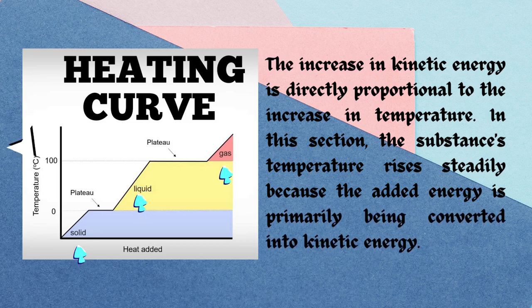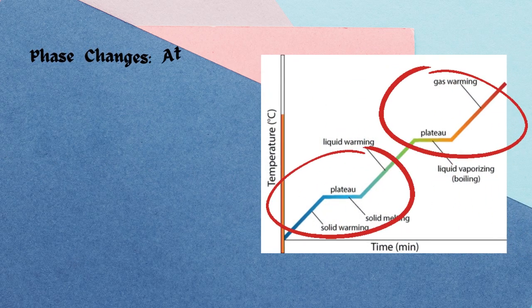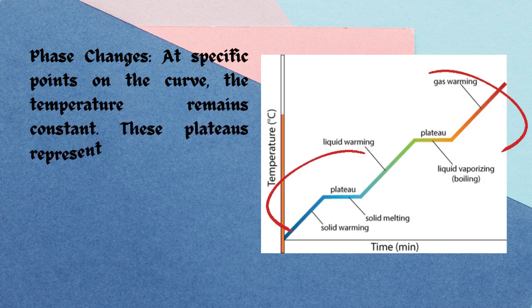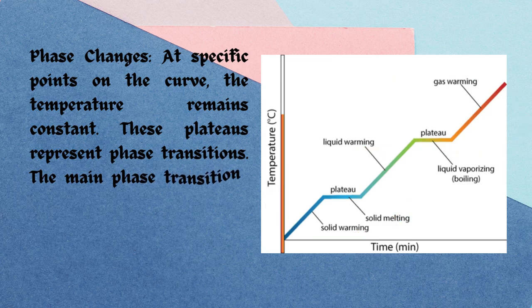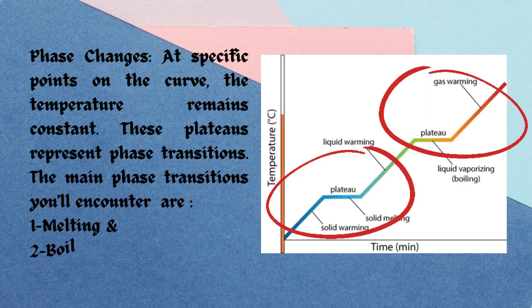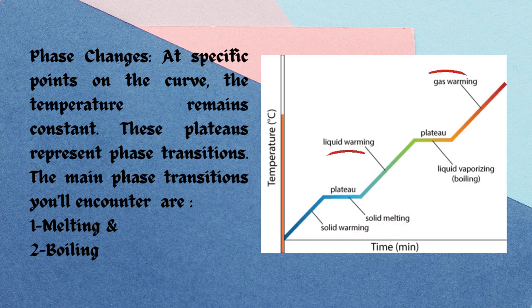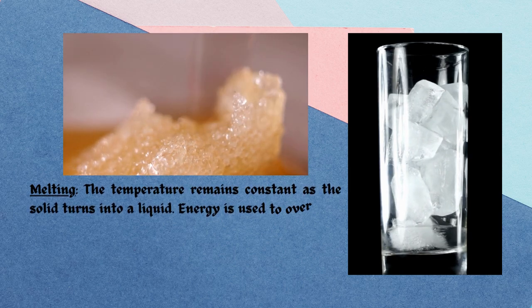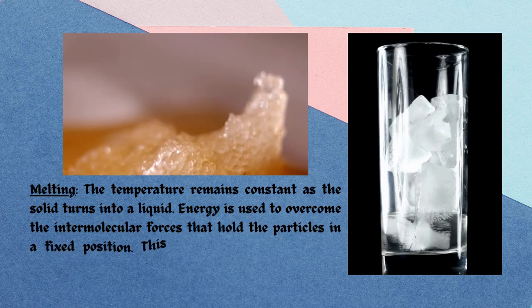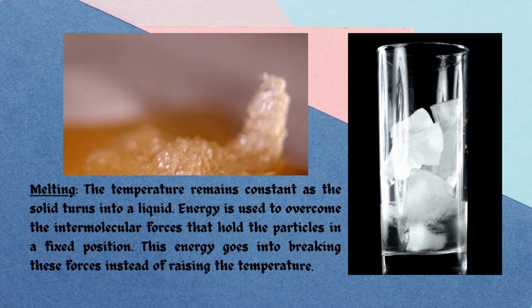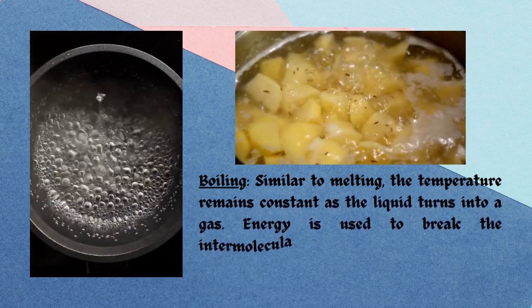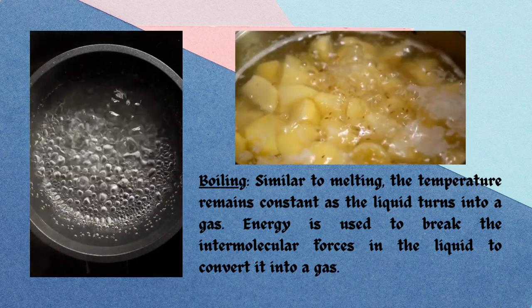In this section, the substance's temperature rises steadily because added energy is primarily being converted into kinetic energy. Now recalling phase changes: at specific points on the curve, the temperature remains constant — these plateaus represent phase transitions. The main phase transitions are melting and boiling. During melting, the temperature remains constant as the solid turns into a liquid; energy overcomes the intermolecular forces holding particles in fixed positions. During boiling, similarly, the temperature remains constant as the liquid turns into a gas, with energy breaking intermolecular forces.